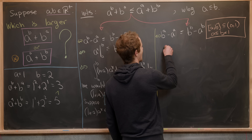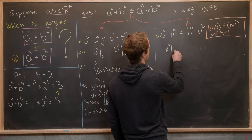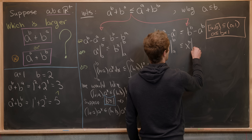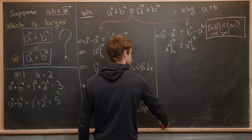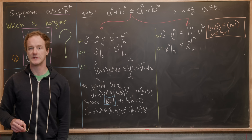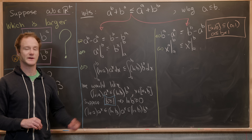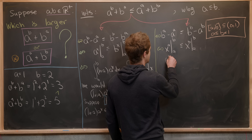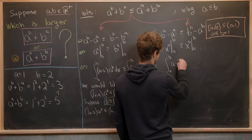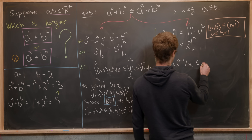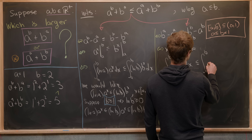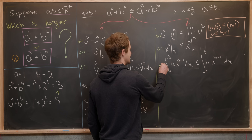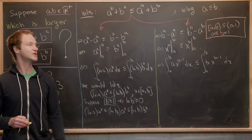The right-branch inequality looks like X to the A evaluated from A to B is less than or equal to X to the B evaluated from A to B. Taking the derivative of both sides turns this into: the integral from A to B of A times X to the A minus one dx is less than or equal to the integral from A to B of B times X to the B minus one dx. This is again equivalent to our goal inequality.